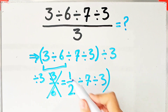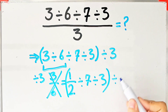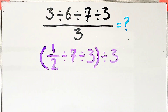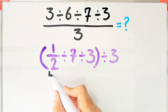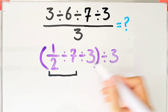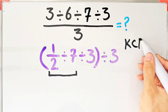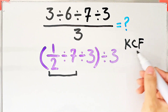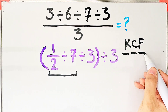Again, we simplify the parentheses. Inside the parentheses, we have 1 over 2 divided by 7 divided by 3. First, we simplify this part. To solve this part, we need to follow the KCF rule: K stands for keep, C stands for change, and F stands for flip.